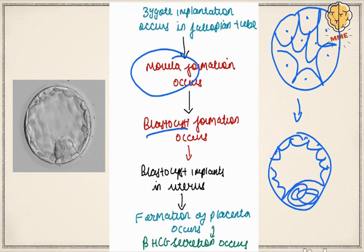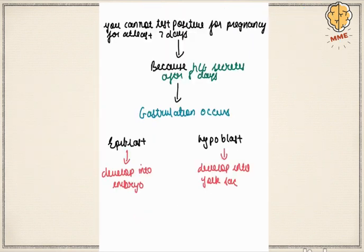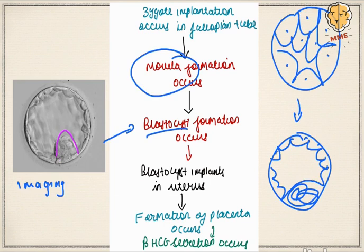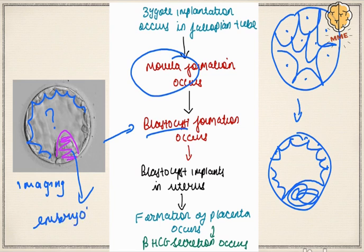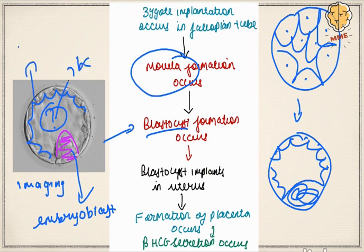After morula formation, a blastocyst results. The blastocyst has two key layers: the embryoblast (inner cell mass), which will give rise to all types of cells whether head or limb, and the outer trophoblast cells. It is important to recognize these layers as the blastocyst is a critical structure.